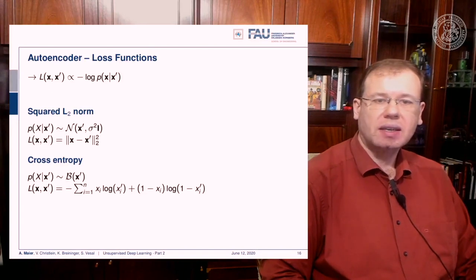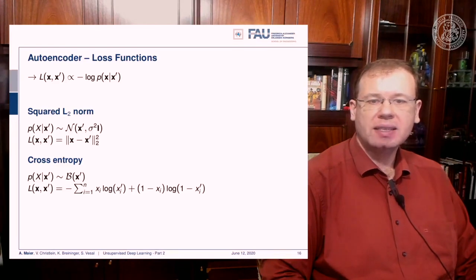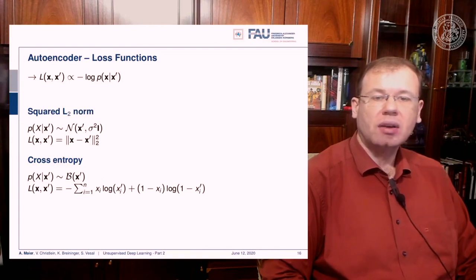Of course, you can also do things like cross entropy. So if you assume the Bernoulli distribution, you see that we end up exactly with our cross entropy, and here then this is simply the sum over the weighted xi times the logarithm of x prime i plus 1 minus xi times the logarithm of 1 minus x prime i. Remember that if you want to use it this way, then your x's need to be in the range of probabilities. So if you want to apply this kind of loss function, then you may want to use it in combination with a softmax function.